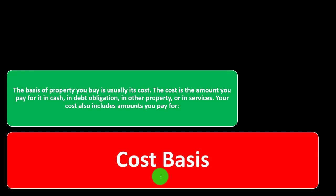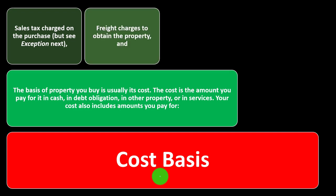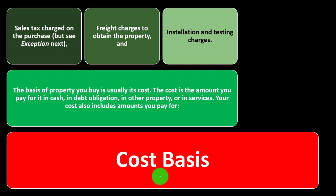Your cost also includes amounts you pay for sales tax on the purchase, freight charges to obtain the property, and installation and testing charges. Things incurred to get the property ready must be capitalized. For example, the freight and installation to get a refrigerator delivered and set up must be included in the capitalized cost — you can't just expense those items, even though you'd like to, because they were necessary to get the asset installed and ready to go.